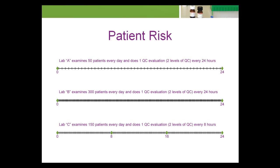Laboratory C tests two levels of QC every eight hours and examines an average of 150 patient specimens daily. Lab C evaluates QC at the same frequency as Lab A in terms of number of patient specimens between QC evaluations, but at a different frequency in terms of time. From CLIA's perspective, both Labs A and B are meeting the regulation's minimum requirement by examining two QC samples every 24 hours, while Lab C is exceeding the minimum requirements by doing six QC examinations every day, split into three QC evaluations.